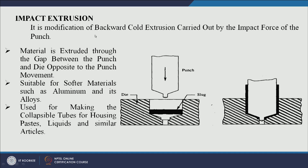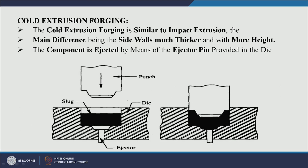Since it is the impact which facilitates the backward flow, it is called impact extrusion. This is mainly used for softer metals and for making collapsible tubes that can hold liquids and paste.